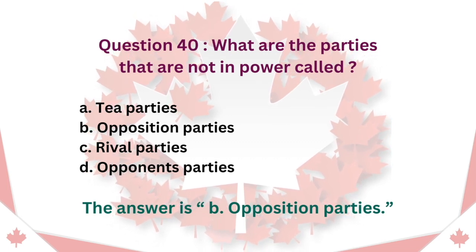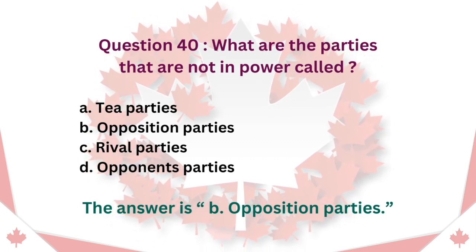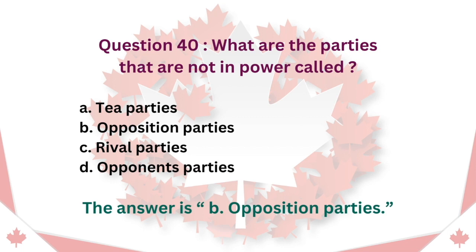Question 40: What are the parties that are not in power called? A. T. Parties. B. Opposition parties. C. Rival parties. D. Opponents parties. The answer is B. Opposition parties.